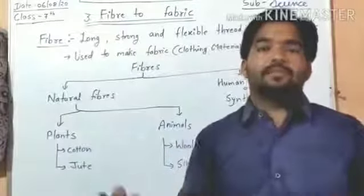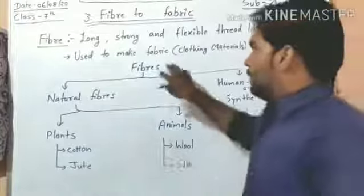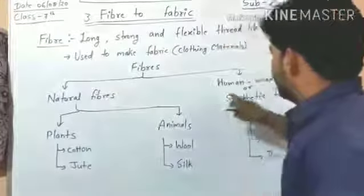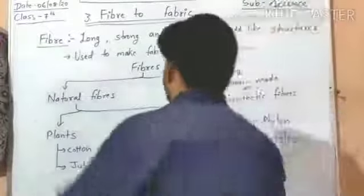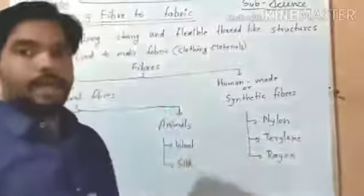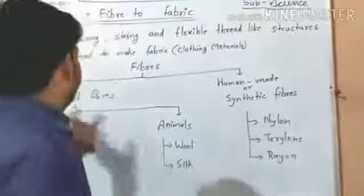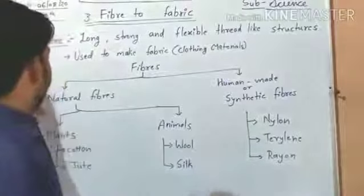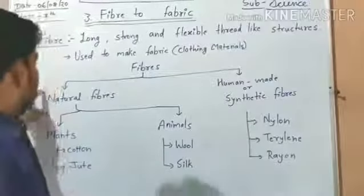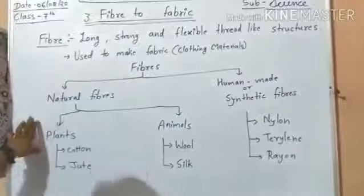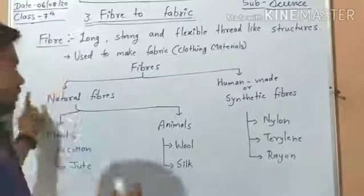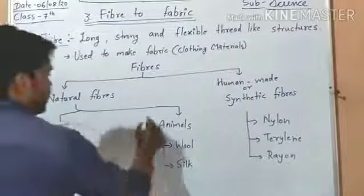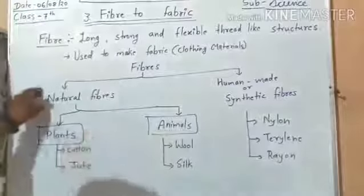Mainly fibers are of two types: one is natural fiber, second is human-made or synthetic fiber. If we talk about natural fiber, we get natural fiber from two sources — one is plants and second is animals.